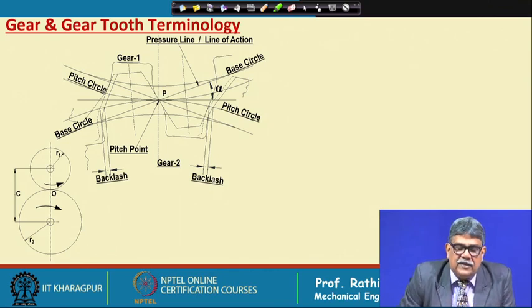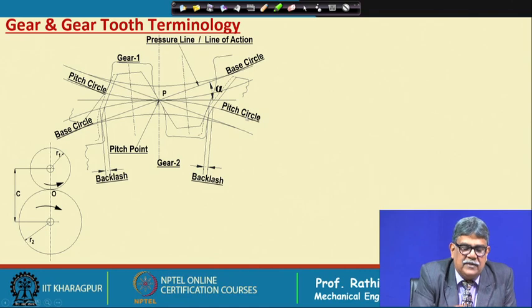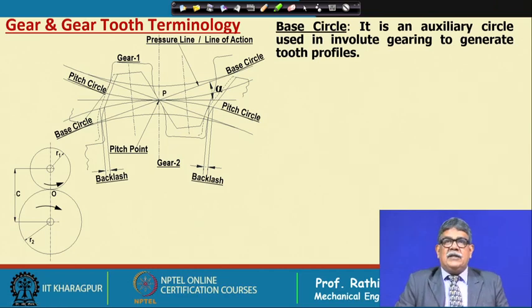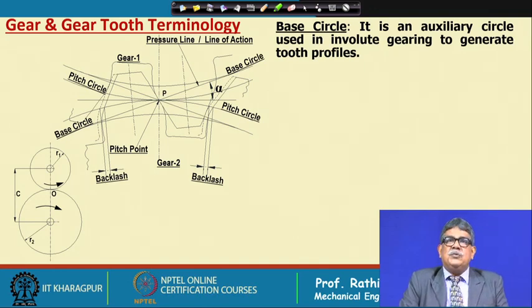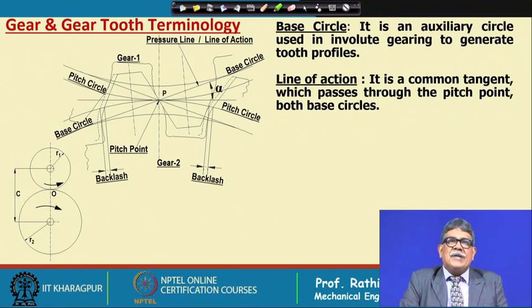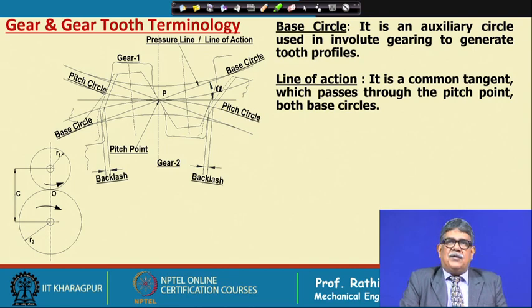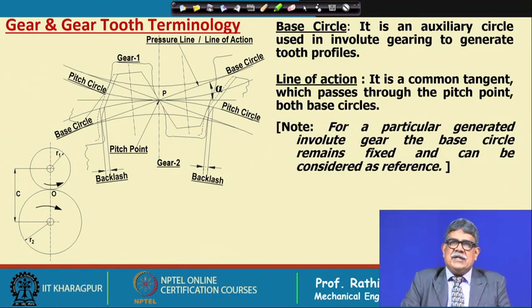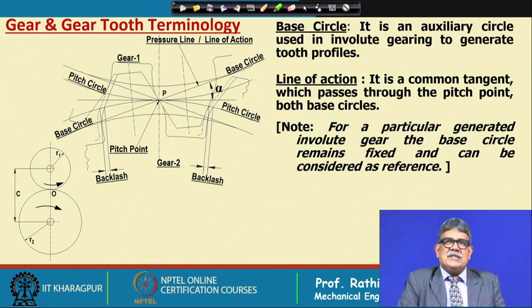In this figure, the base circle, pitch circle, pitch point, and backlash are shown. The base circle is an auxiliary circle used in involute gearing to generate the tooth profile. The line of action or pressure line is a common tangent that passes through the pitch point and is tangent to both base circles. For a particular generated involute gear, the base circle remains fixed and can be considered as reference.